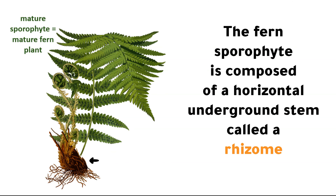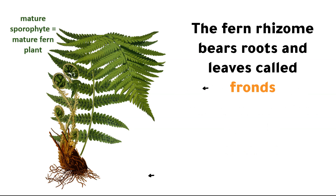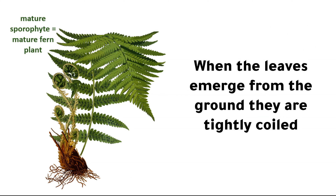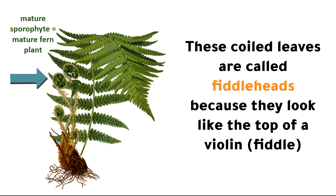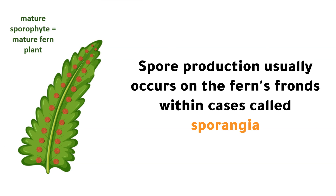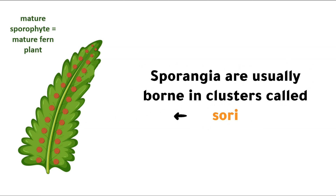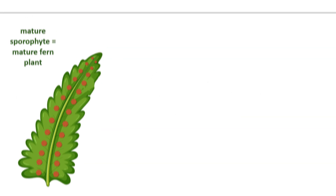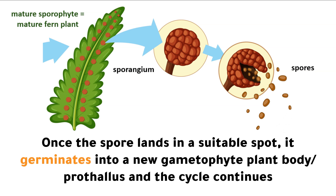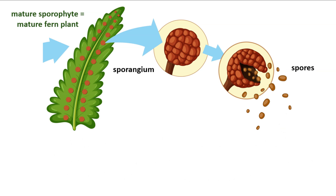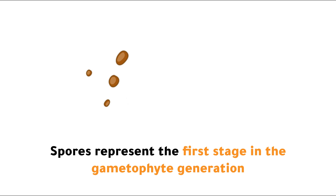The fern sporophyte is composed of a horizontal underground stem called a rhizome. The fern rhizome bears roots and leaves called fronds. When the leaves emerge from the ground, they are tightly coiled. These coiled leaves are called fiddleheads because they look like the top of a violin. Spore production usually occurs on the fern's fronds within cases called sporangia. Sporangia are usually borne in clusters called sori. When the spores are mature, they are released and dispersed away from the parent plant. Once the spore lands in a suitable spot, it germinates into a new gametophyte plant body or prothalus, and the cycle continues. Spores represent the first stage in the gametophyte generation.